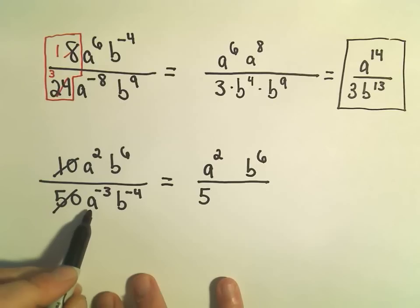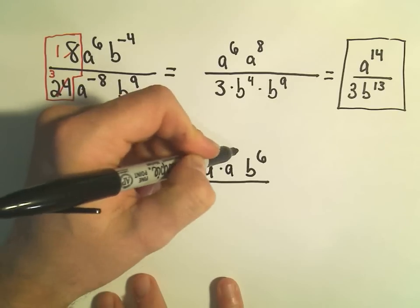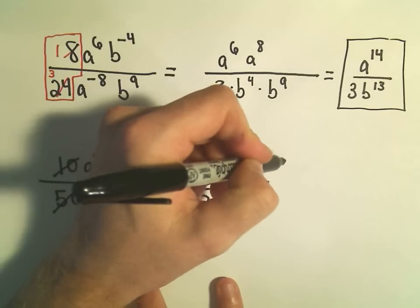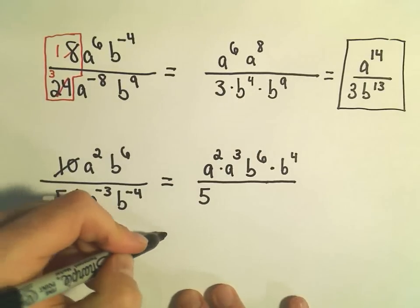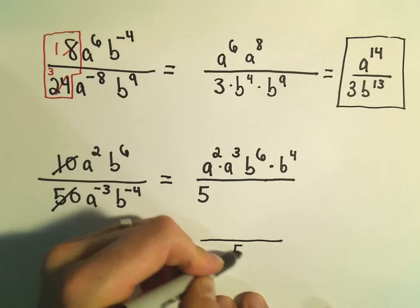Okay, so then I look at my denominator. I have a to the negative 3rd. That'll go upstairs as a to the positive 3rd. Then we have b to the negative 4th, which we can put up as b to the positive 4th. And now we can simplify. So it doesn't look like there's going to be much left in the denominator except for the 5.